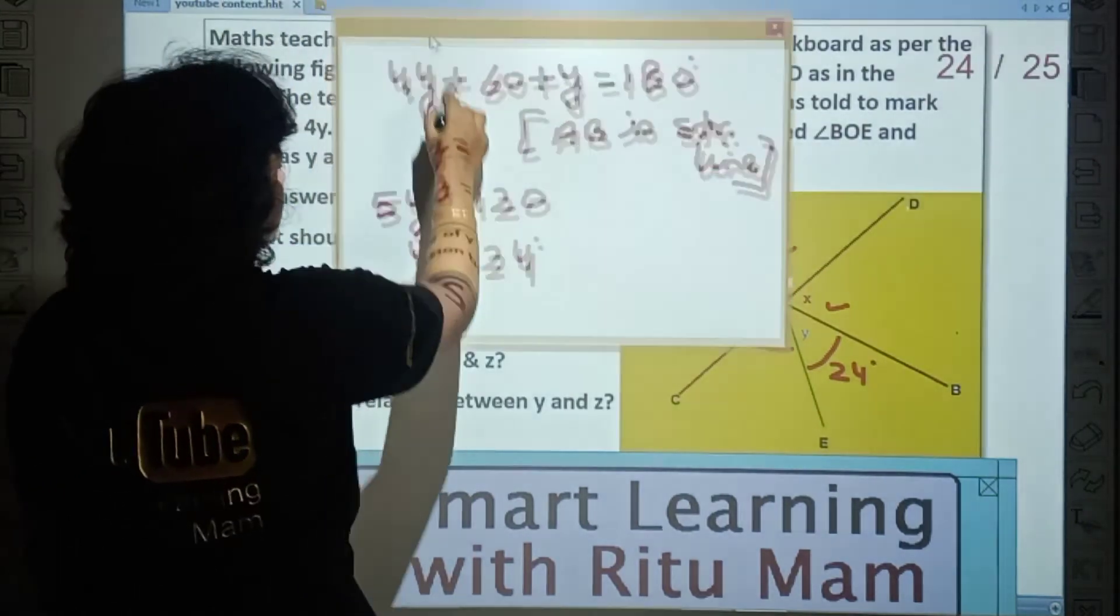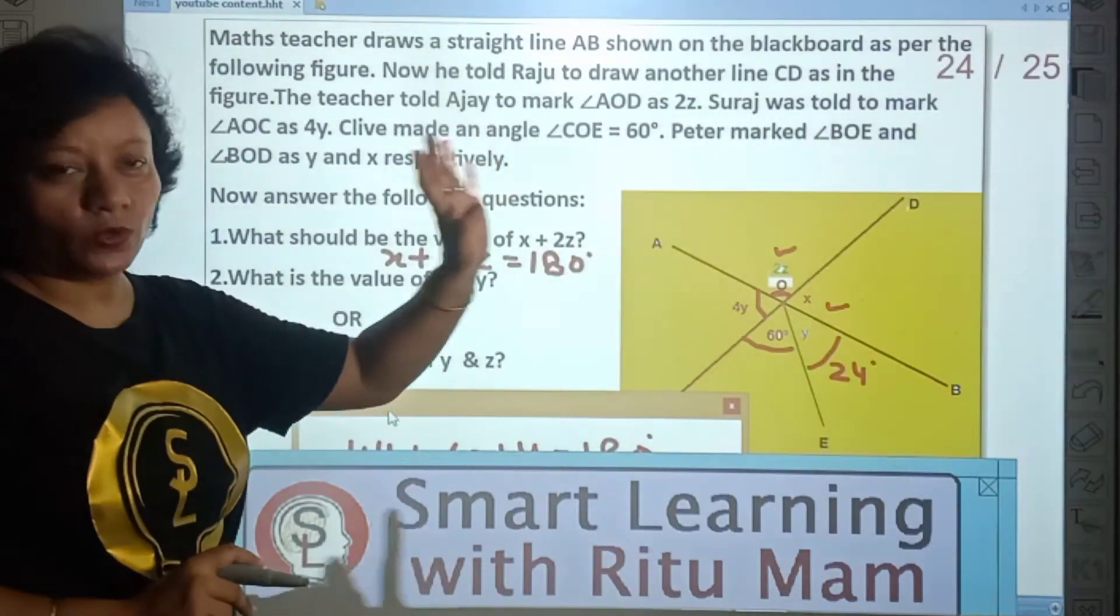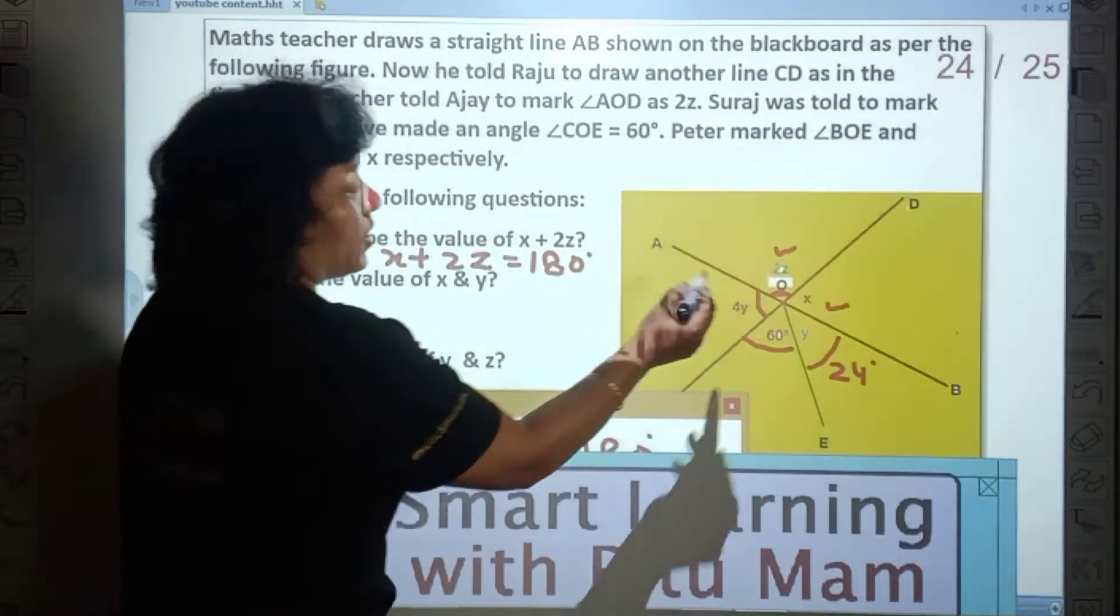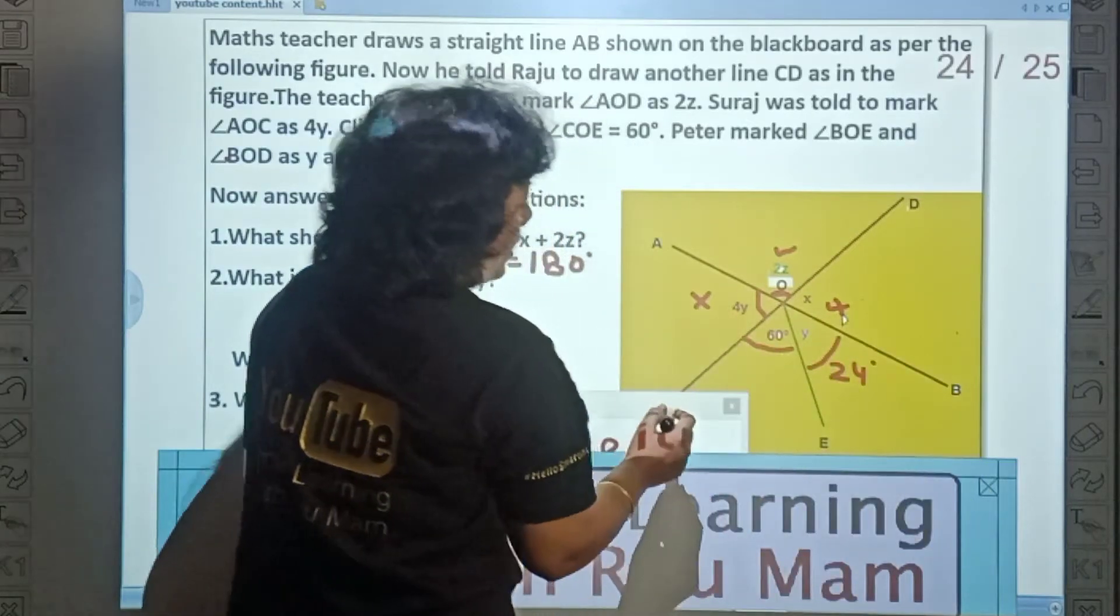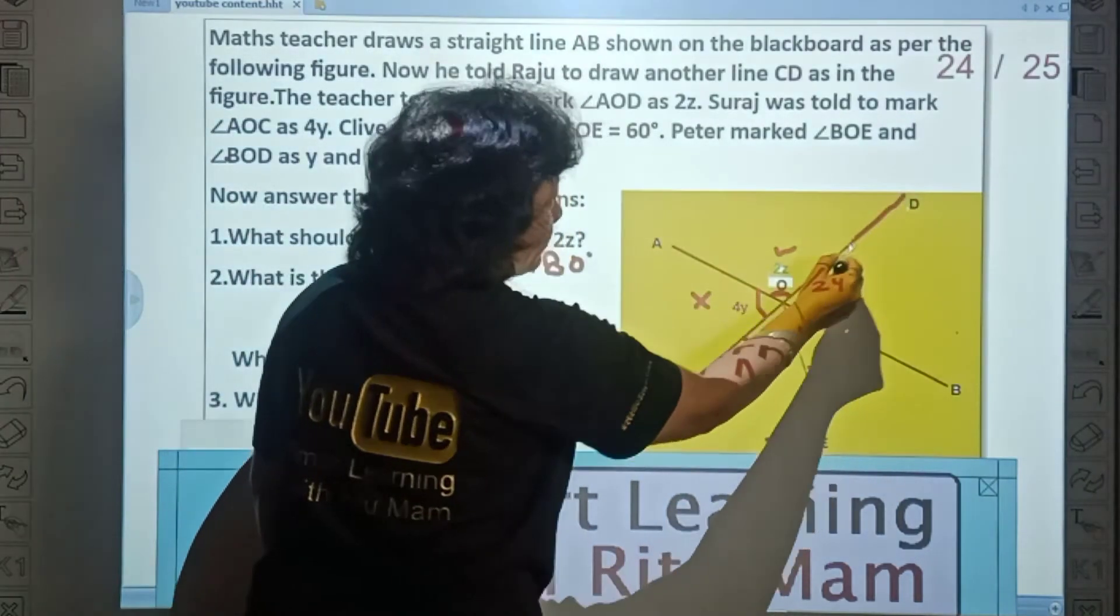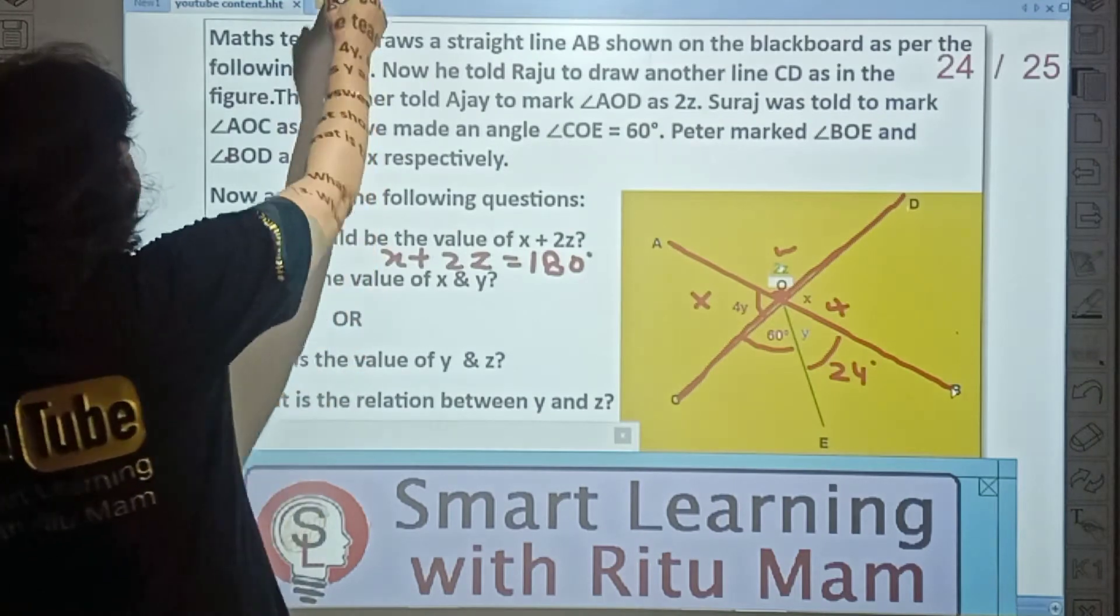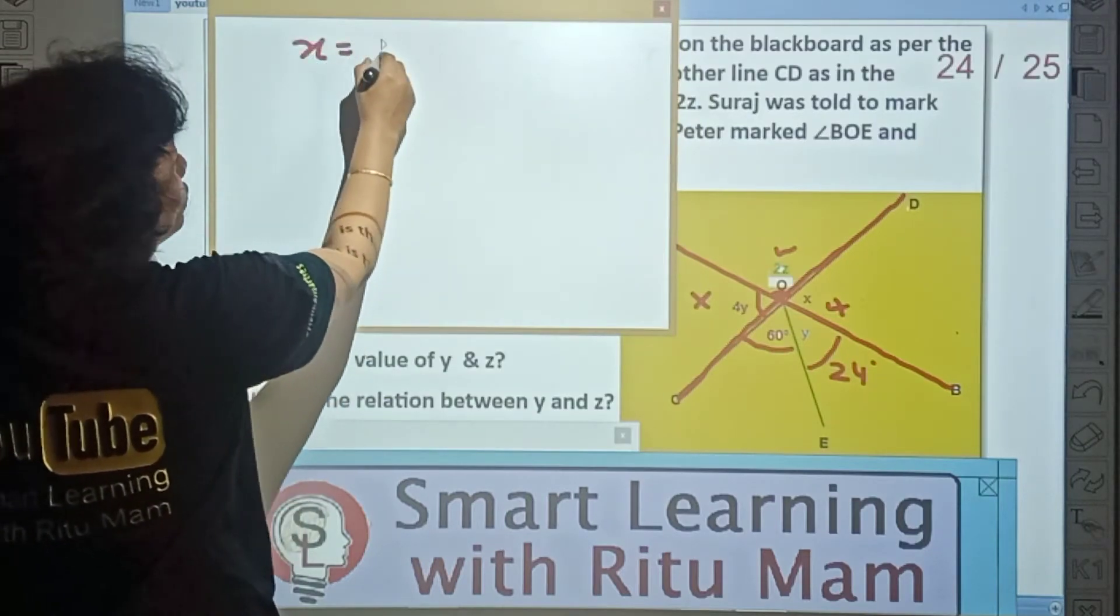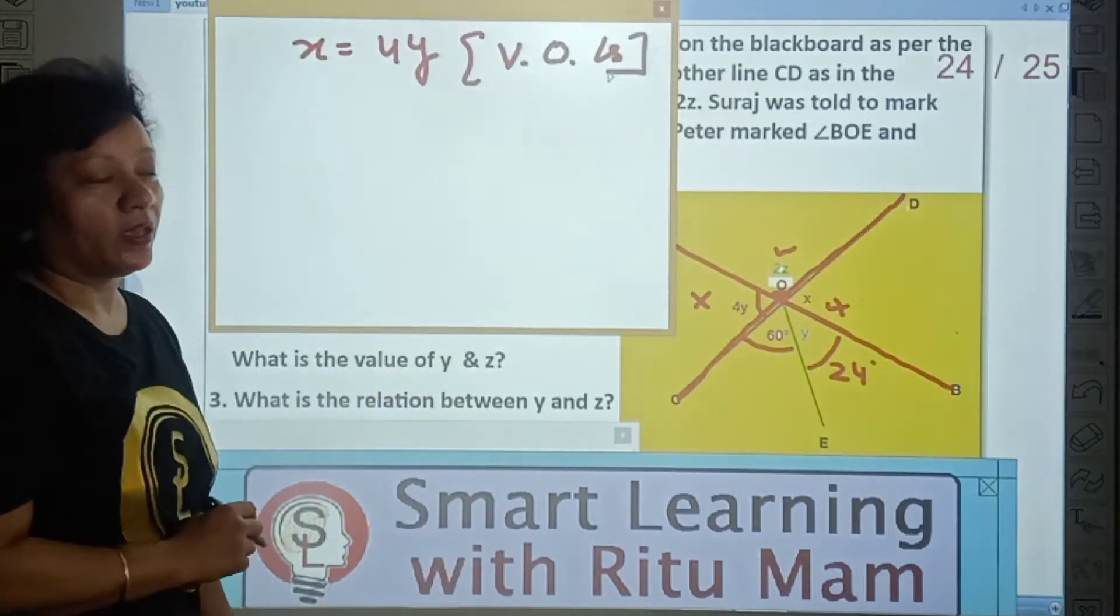Now look, you have a choice of two questions. Either you have to find X and Y, or Y and Z. Y has to be found in both, so that work is done. Now let's understand which you can easily find, X or Z. Look carefully. X, 4Y. Look here. 4Y and X. These two angles are vertically opposite angles as this is a straight line, this is a straight line. So these two angles are vertically opposite.